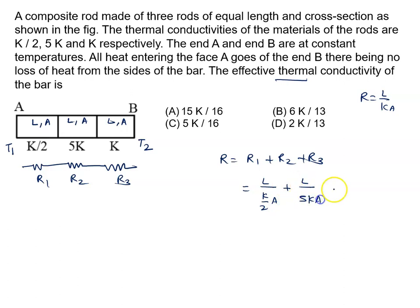So net resistance: if you look at the complete length, it will be 3L, and let the effective conductivity be K dash and the area of cross-section is capital A. Here L/A cancels out.